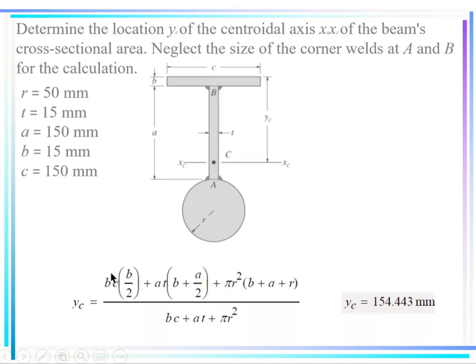Okay. That's the area multiplied by its centroid distance from this line here — same with the other one. Do I divide by the total area? Yes.